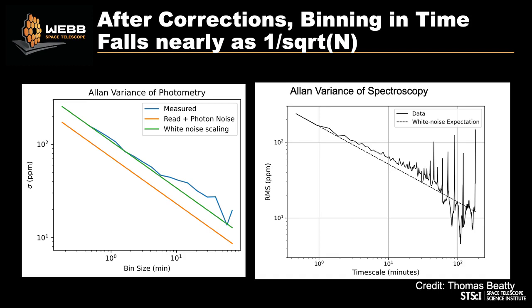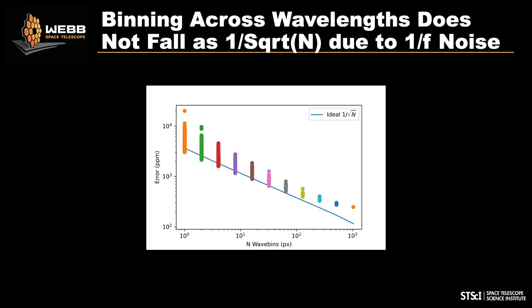When binning in time, the precision improves. This is an Allan variance plot: the x-axis is bin size, y-axis is noise. After correcting for the jump and exponential ramp at the beginning for the short wavelength, it scales down very nicely to the 20 parts per million level. However, when averaging across wavelengths it does not follow a 1 over square root of N law — a large part of this is due to 1/f noise, scaling slightly above what the ideal 1/sqrt(N) law would predict.